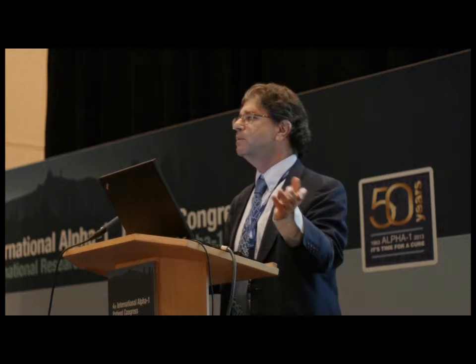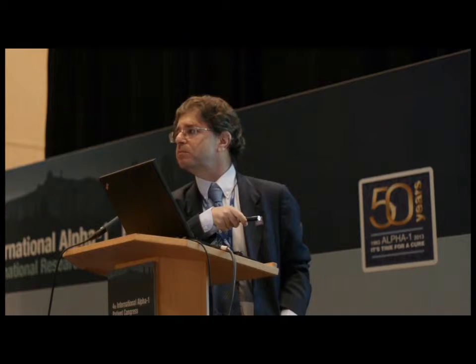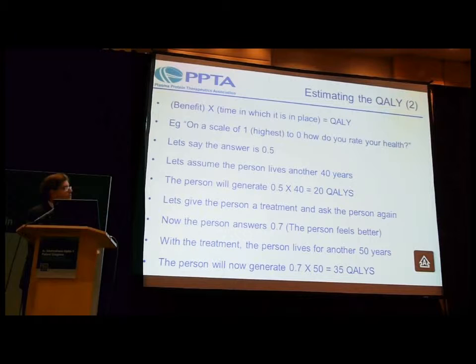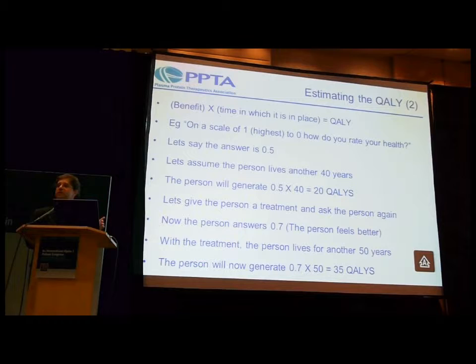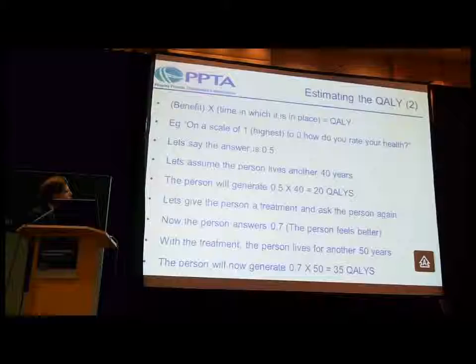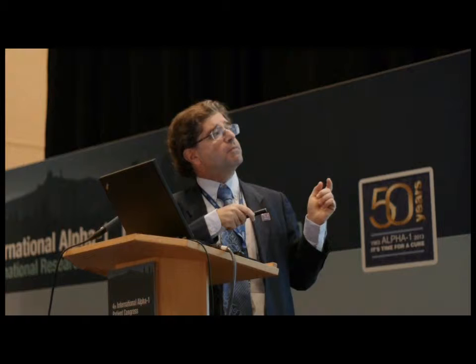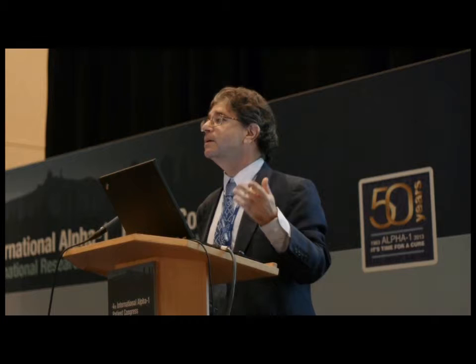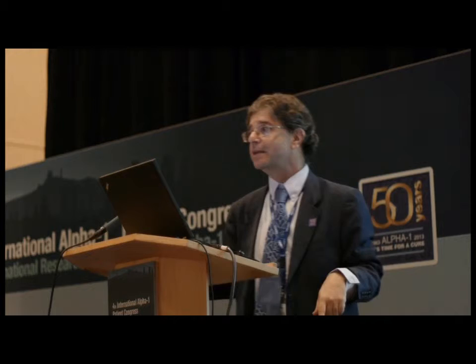Now let's say the person is given some kind of treatment — maybe augmentation, maybe another alpha-1 related treatment. After some time on this treatment, we do the assessment again and ask, how are you feeling now? And the person says: now I'm feeling better, I assess myself at 0.7. And we know that through this treatment, life expectancy is also going to increase, from 40 years to 50 years. So now it's 0.7 times 50 — that gives 35 QALYs. Before the treatment, 20 QALYs; after the treatment, 35 QALYs. As a result of the treatment, the person now has 15 more QALYs.